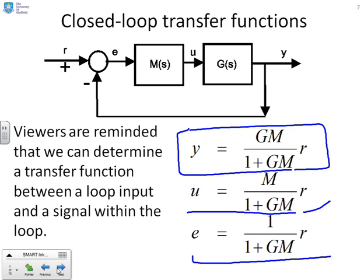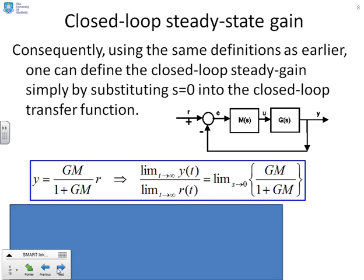We particularly want to look at Y. For closed loop steady state gain, using the same definition as earlier — calculating gain by substituting S equals zero into the transfer function — we now have the closed loop transfer function GM over 1 plus GM. So the steady state gain gives the limiting relationship between Y and the loop input R.